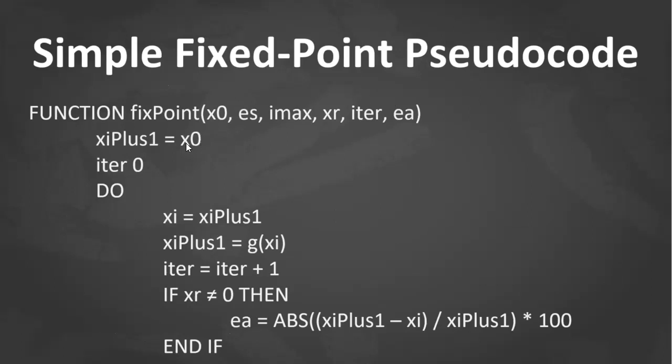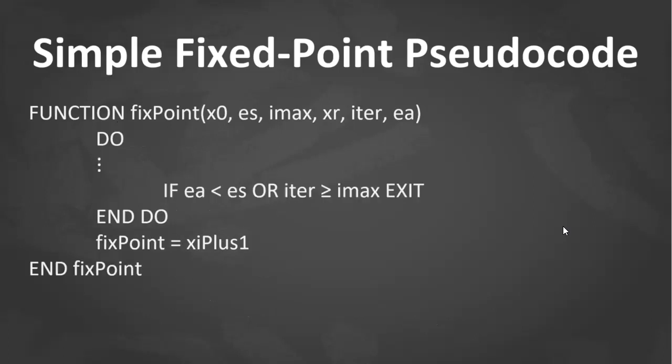The pseudocode for this simple fixed point: first, your input from the user, you put that in xi+1. That will be your previous value, the xi. Then iterate, increase the iteration. If the root is not equal to 0, then we compute for ea. Then if ea is less than es, or the percent relative approximate error is less than the tolerance, or the iteration is equal to or greater than the maximum iteration we allow, then we exit. And the fixed point is equal to the final root estimate.